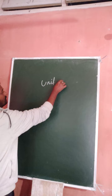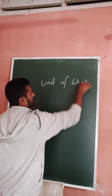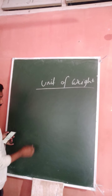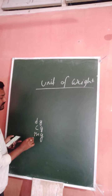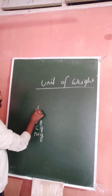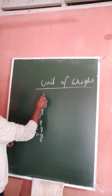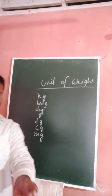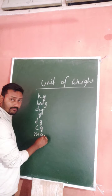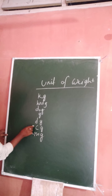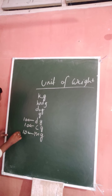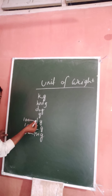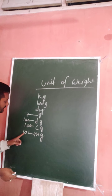Suppose you consider a unit of weight. The lowest unit is milligram. When you multiply milligram by 10, you will get centigram. Again, centigram multiplied by 10, you will get desigram. Again, when you multiply desigram by 10, you will get gram.